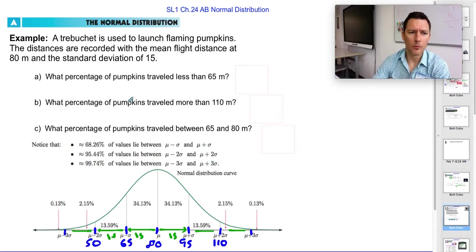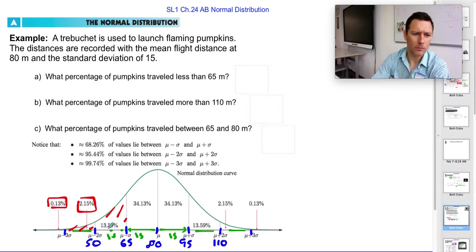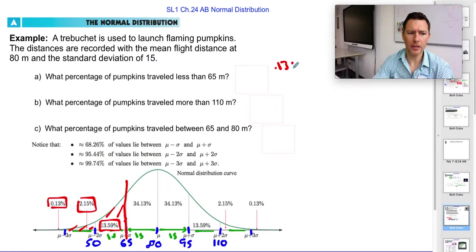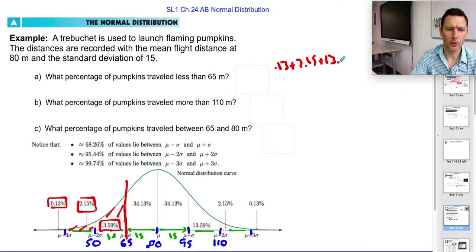So what's the percentage of the pumpkins that traveled less than 65 meters? Well, less than 65 meters would be all of this. So just with what we know about these, I know that there would be this many, and this many, and this many, that didn't make it past 65. So you'd say, alright, 0.13 plus 2.15 plus 13.59.